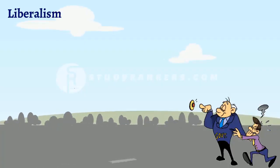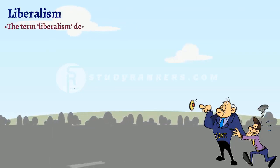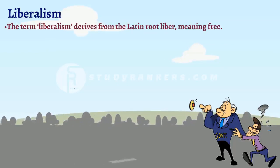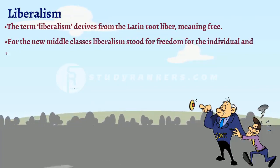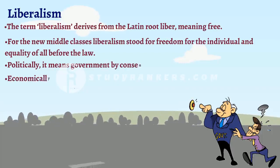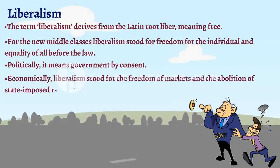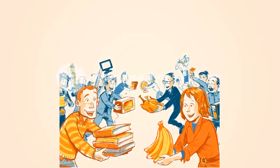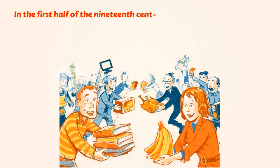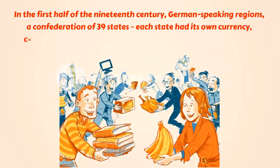Ideas of national unity in early 19th century Europe were closely allied to the ideology of liberalism. The term liberalism derives from the Latin root liber, meaning free. For the new middle classes, liberalism stood for freedom for the individual and equality of all before the law. Politically, it meant government by consent. Economically, liberalism stood for freedom of markets and the abolition of state-imposed restrictions on the movement of goods and capital. For example, in the first half of the 19th century, the German-speaking regions — a confederation of 39 states — each had its own currency and customs barriers, which proved obstacles to economic exchange and growth.